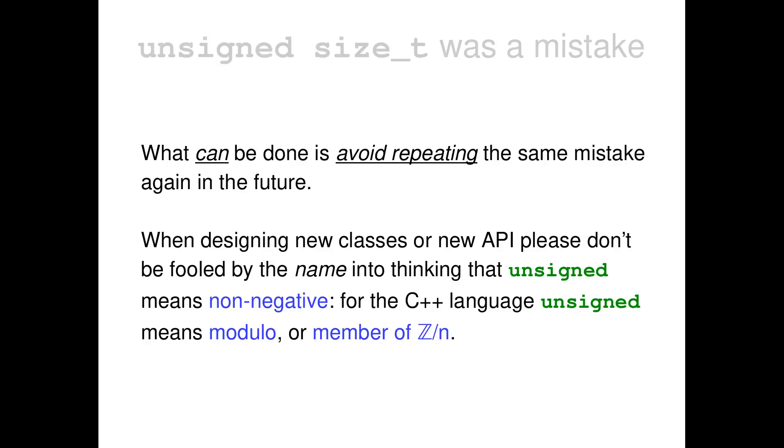So using unsigned for a size is a wrong choice. Using unsigned for a counter is a wrong choice. So don't repeat the same mistake. There are no excuses now. Because the numbers, the counters we have now, are much bigger. Now there are 32 or even 64 bits. So there is really... That extra bit is not worth the wrong semantics that we get from using unsigned for a counter.